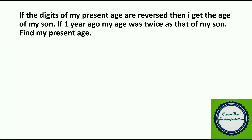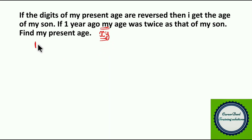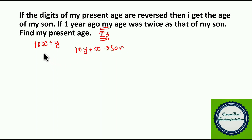Moving to question number 14. If the digits of my present age are reversed, I get the age of my son. If 1 year ago my age was twice that of my son, find my present age. Let my present age be represented as 10x plus y (x tens, y ones). Then my son's age is 10y plus x. One year ago my age was 10x plus y minus 1, and my son's age was 10y plus x minus 1.